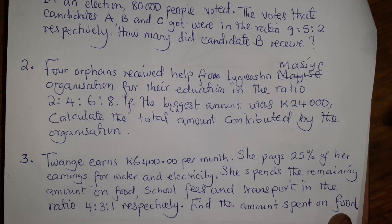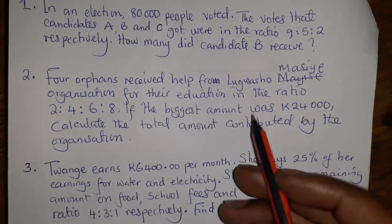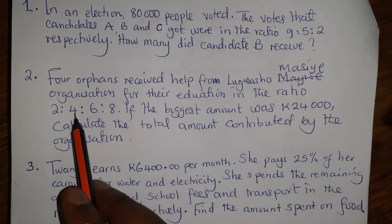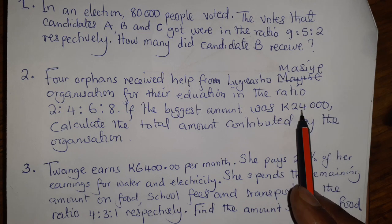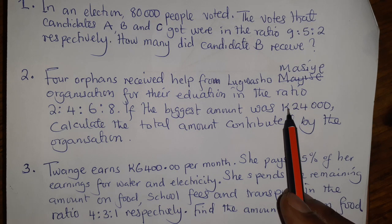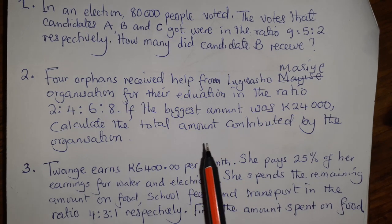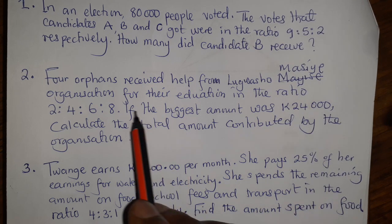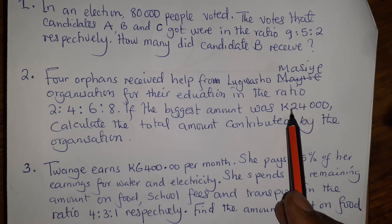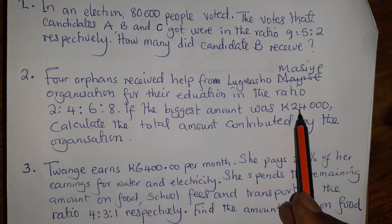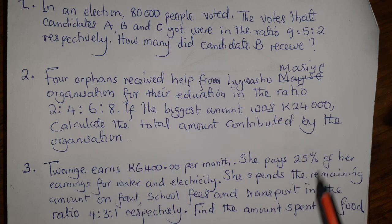Next question. Four orphans received help from an organization for their education in the ratio 2 to 4 to 6 to 8. If the biggest amount was 24,000 — meaning the biggest ratio received 24,000 — you need to pay attention: these people did not share this amount equally. This is the amount received by the highest ratio. So it's different from the first question. Calculate the total amount contributed by the organization.